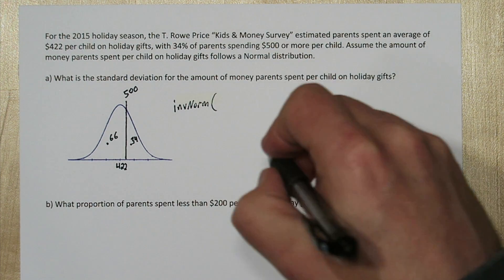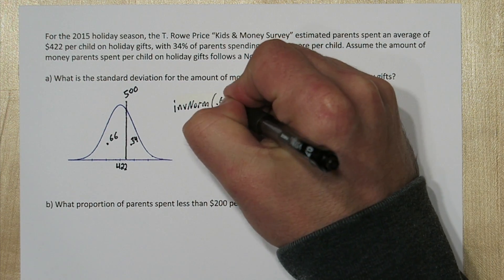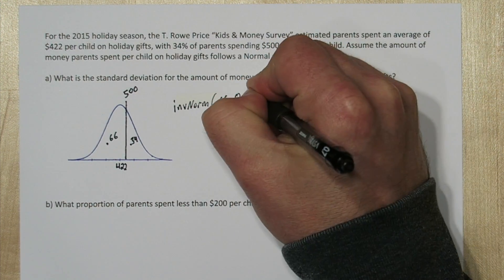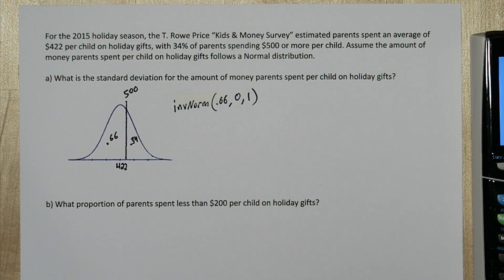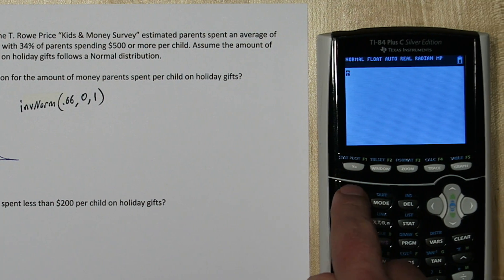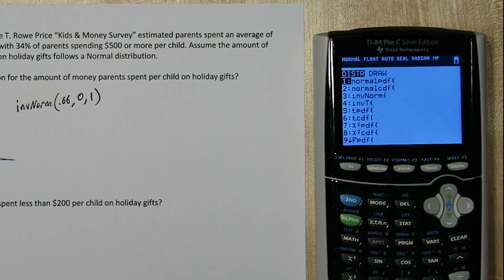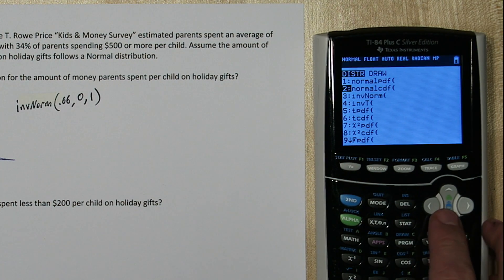So to do that, we just do inverse norm 0.66 with a mean of 0 and a standard deviation of 1. On the calculator, press 2nd and vars. This is your distribution menu. Go down to inverse norm.